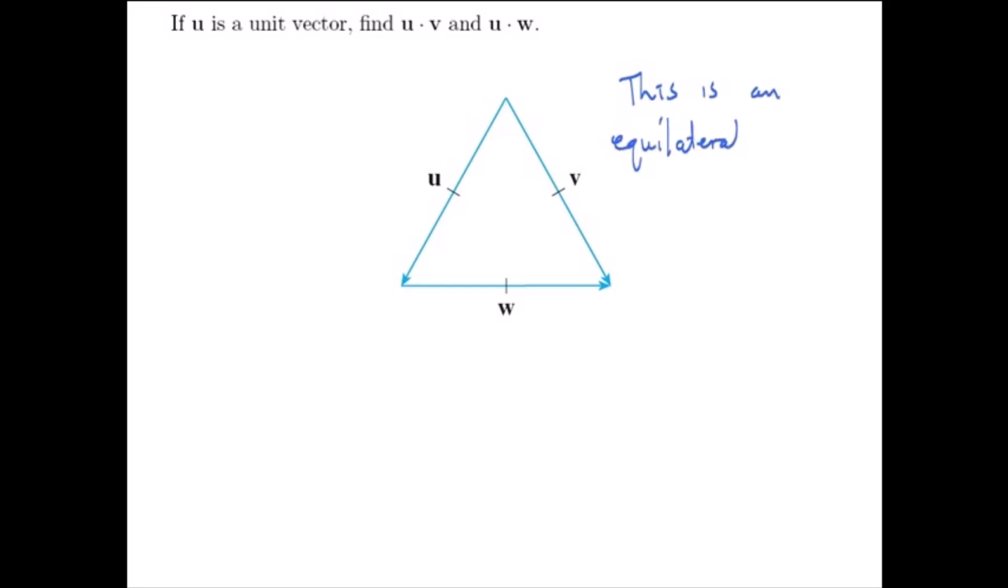We can use that to help us find the dot products. Since it's an equilateral triangle, the magnitude of u is equal to the magnitude of v, which is equal to the magnitude of w. And u is a unit vector, so all of these have the same length of 1. We also know that since this is an equilateral triangle, the angle formed by each of these vectors is 60 degrees.